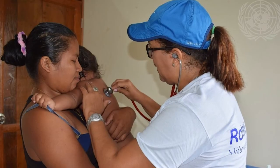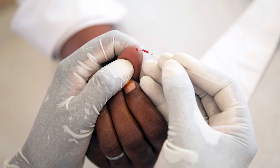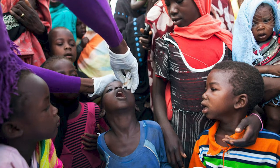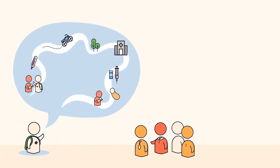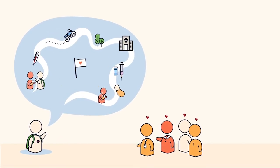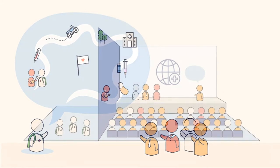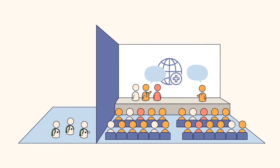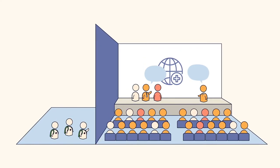As CHWs, we have a valuable perspective and unique understanding of the communities where we work. Advocacy and storytelling are tools we can use to make others aware of an issue and to call on them to take action. This training aims to equip you with the skills to have your voice heard on the global stage.